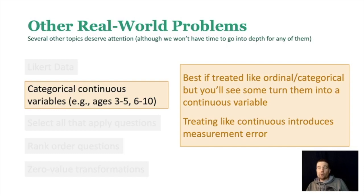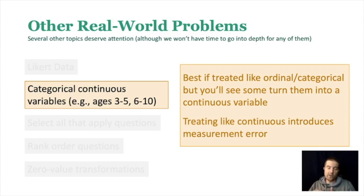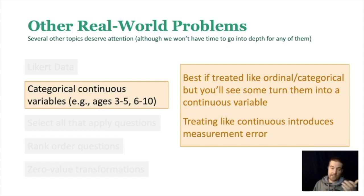For categorical continuous variables, it's best to treat them as ordinal or categorical, though some people turn them into a continuous variable. The issue is you have to pick a point to represent each category — for example, if we have ages 3 to 5 and 6 to 10, you have to decide what age best represents 3 to 5: is it 4, 3, or 5? That decision is arbitrary. Many just pick the midpoint and treat it as continuous, but treating it as continuous introduces measurement error, which we'll discuss in the next lecture. So it's generally best to treat it as ordinal or categorical, because that's how it was measured.